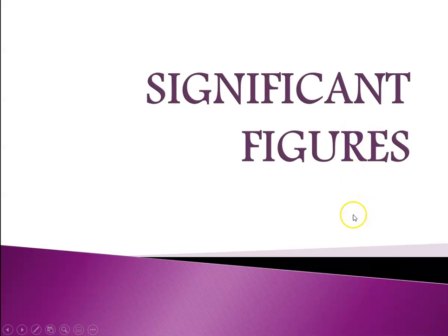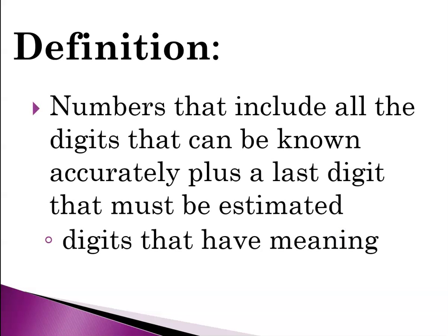That leads us to a discussion of significant figures. Significant figures are all the digits that can be known accurately, plus a last digit that must be estimated — they are digits that have meaning. The reason we use significant figures, and we're going to have rules to use them, is that when we report a number in science, we have to have confidence in what that number means. The number of digits you report in a measurement tells anyone who looks at it what kind of instrument was used and how you arrived at it.